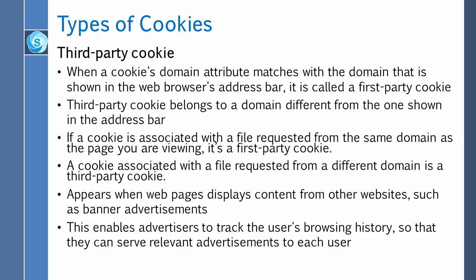There is another kind of cookie which is also very popular, called third-party cookie. When a cookie's domain attribute matches the domain shown in the web browser's address bar, it's called a first-party cookie. A third-party cookie belongs to a domain different from the one shown in the address bar. A cookie associated with a file requested from a different domain is a third-party cookie; it appears when web pages display content from other websites such as banner advertisements. It enables advertisers to track the user's browsing history so that they can serve relevant advertisements to each user.